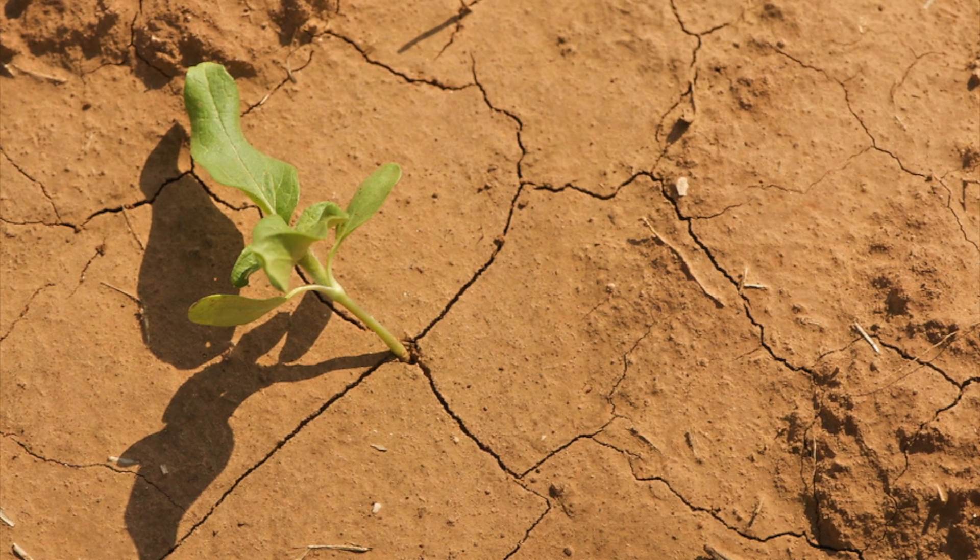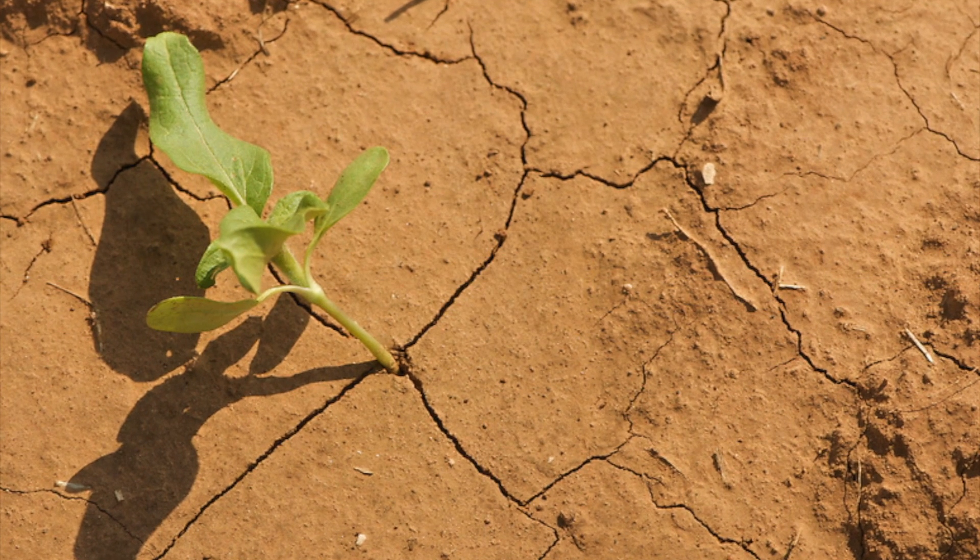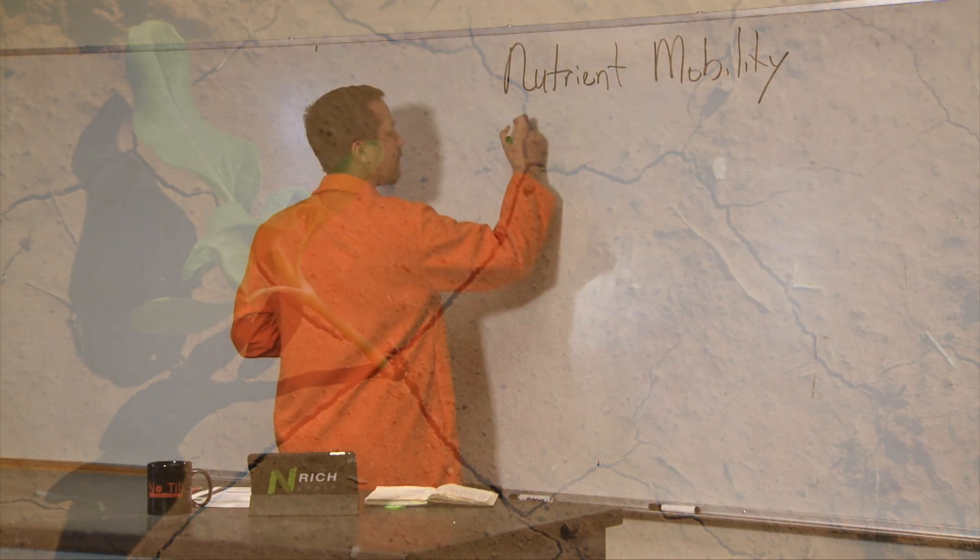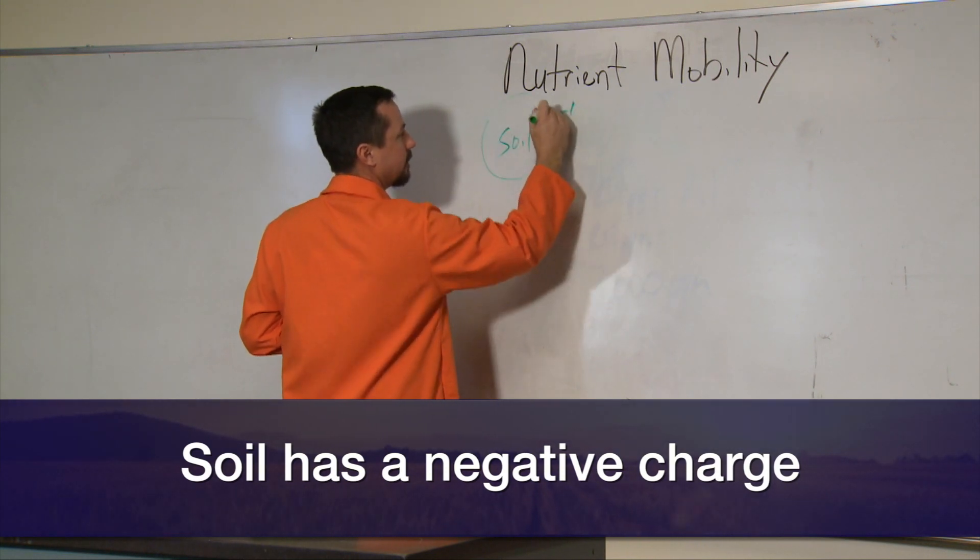Now we have to start with the soil itself, not the nutrient, but the soil. The soil itself has a net negative charge. So if the soil particle is right here, it has a negative charge to it.